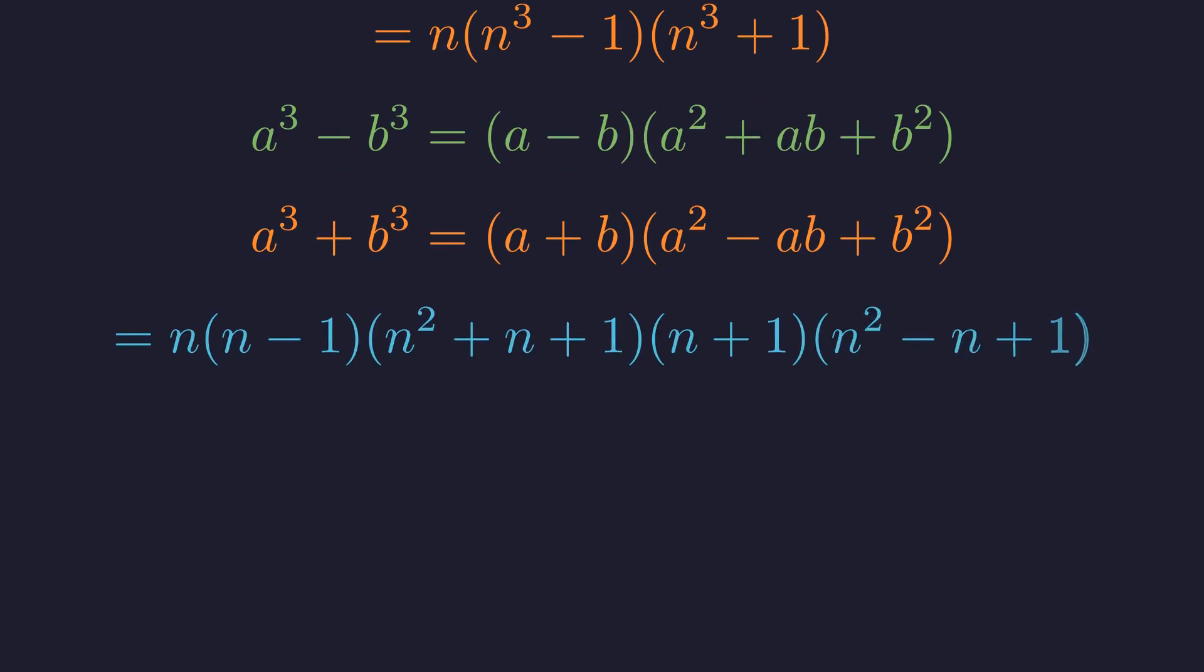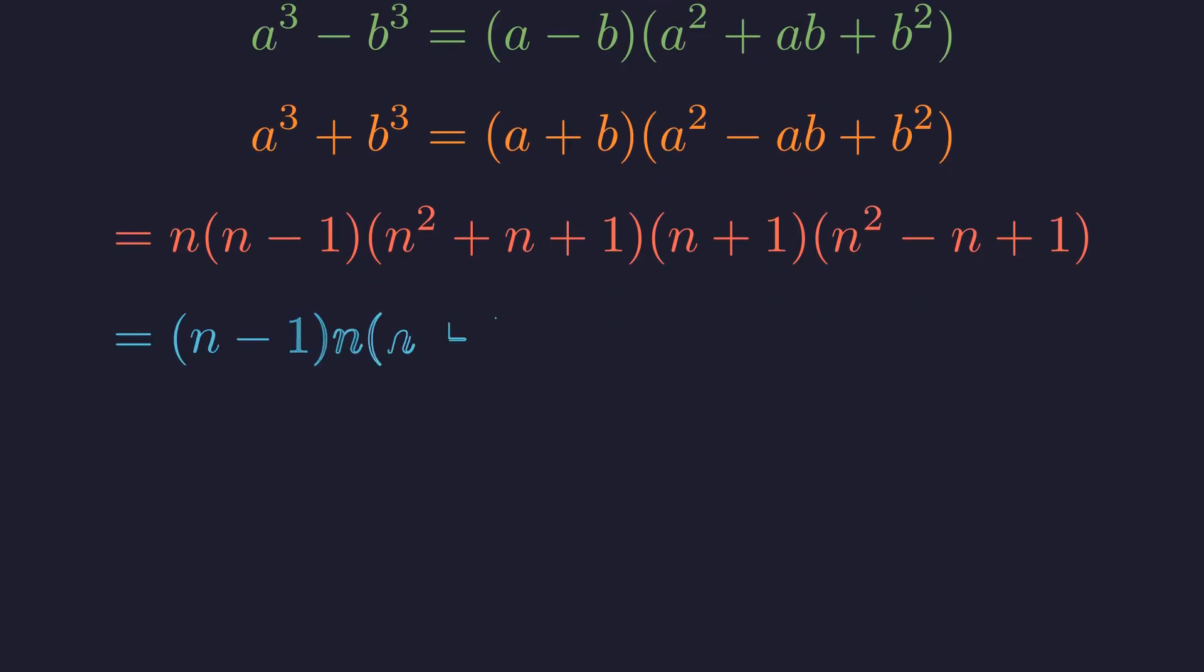When we apply these formulas, we get this beautifully expanded form, but look closely. Do you see something special? We have n, n - 1, and n + 1 hiding in there. Let me rearrange this to highlight what's really going on. Those three terms are the key to everything. There we have it, the complete factorization. This structure is going to unlock everything we need.